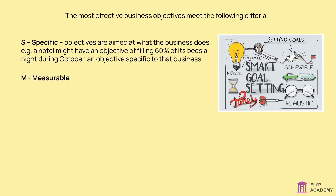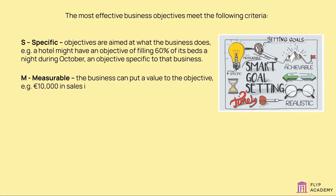M — Measurable: the business can put a value to the objective. For example, 10,000 euro in sales in the next half year of trading.